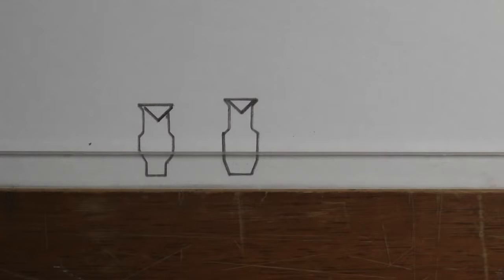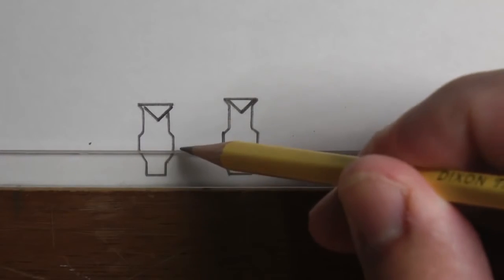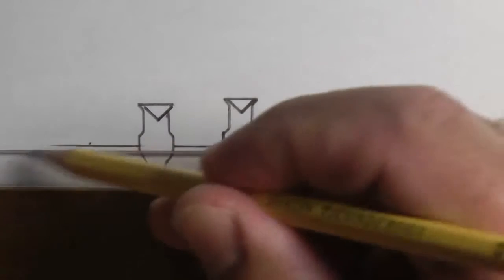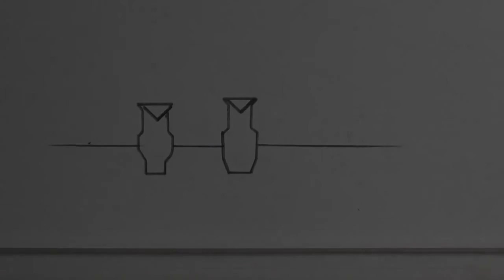And this pencil tip is starting to get a little dull. The lines are getting thicker, so I'm going to switch to a new, sharper pencil that I have sitting here at my side. I draw the lines in between. And there's my two lights on a pipe.